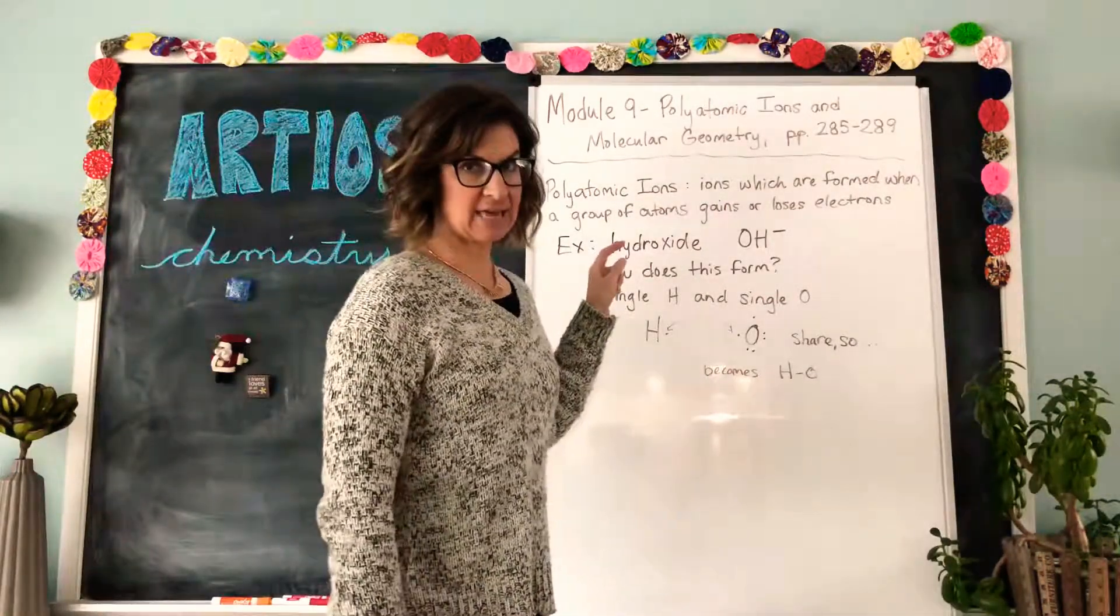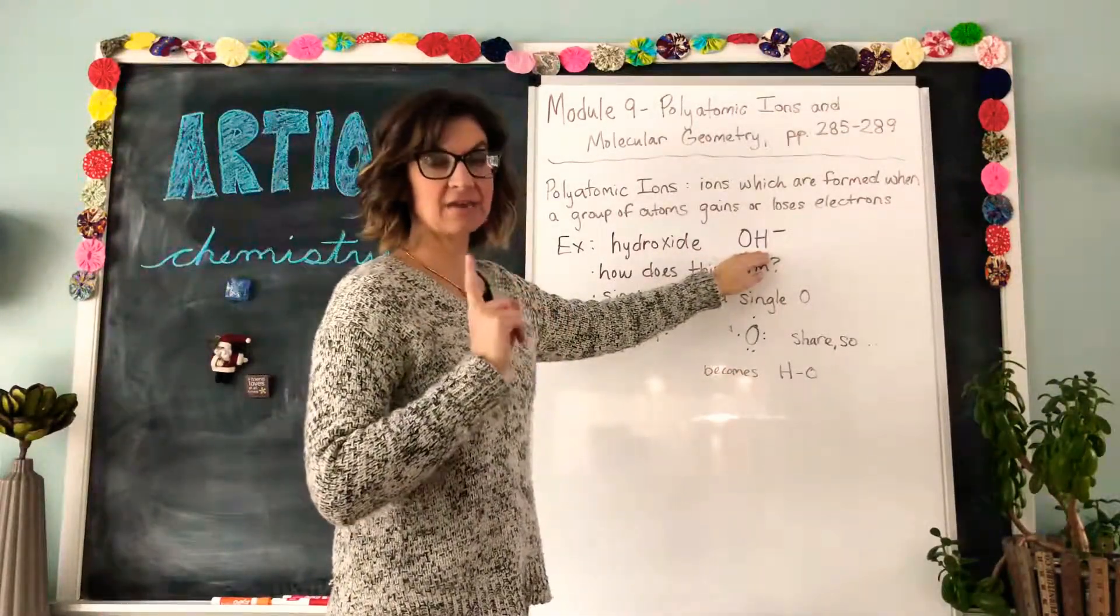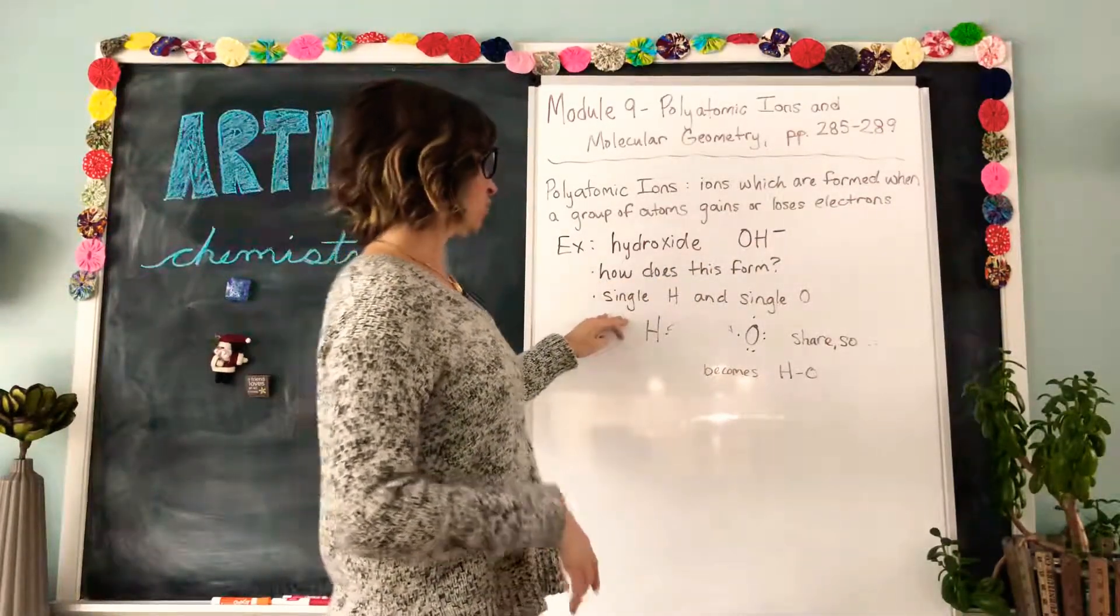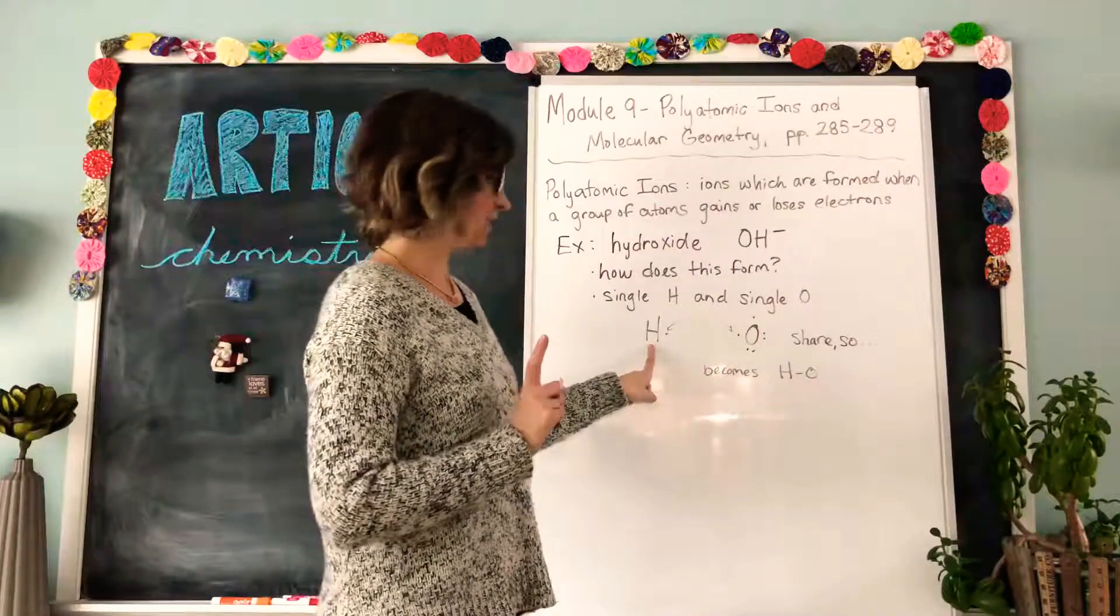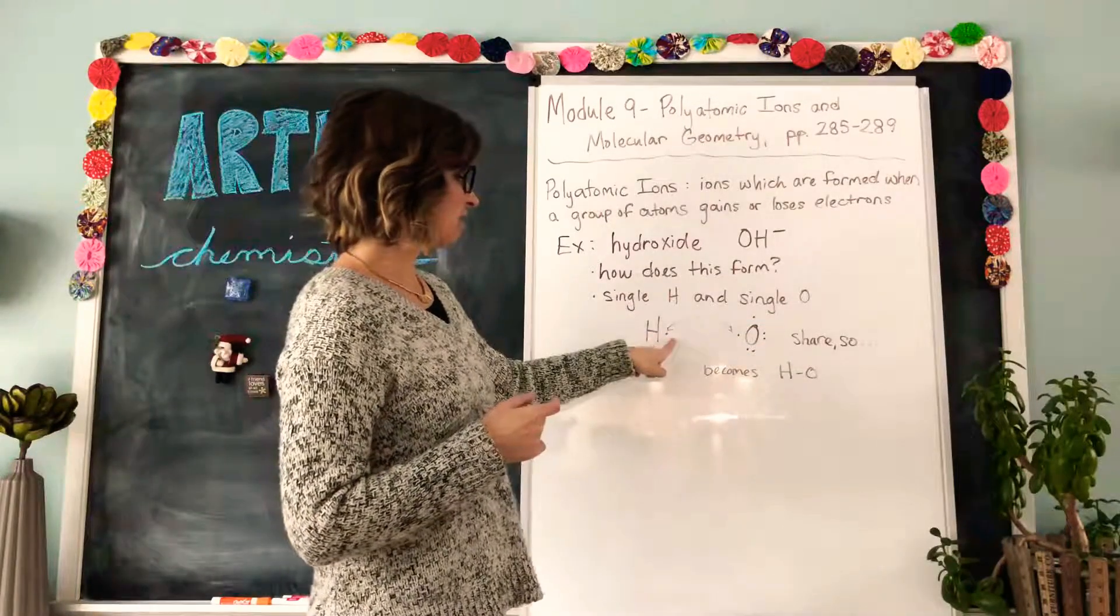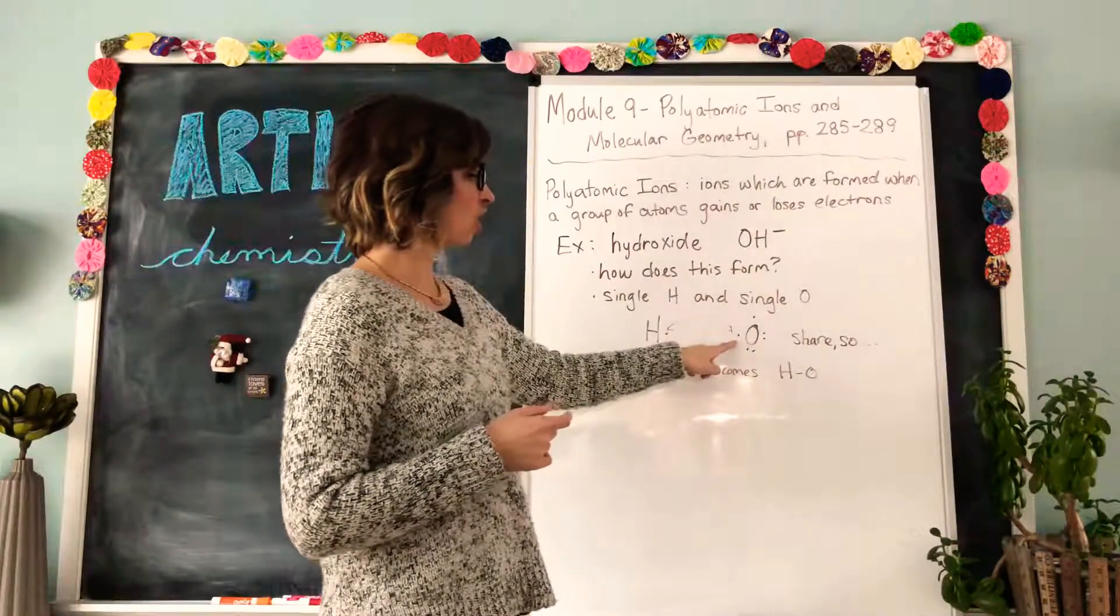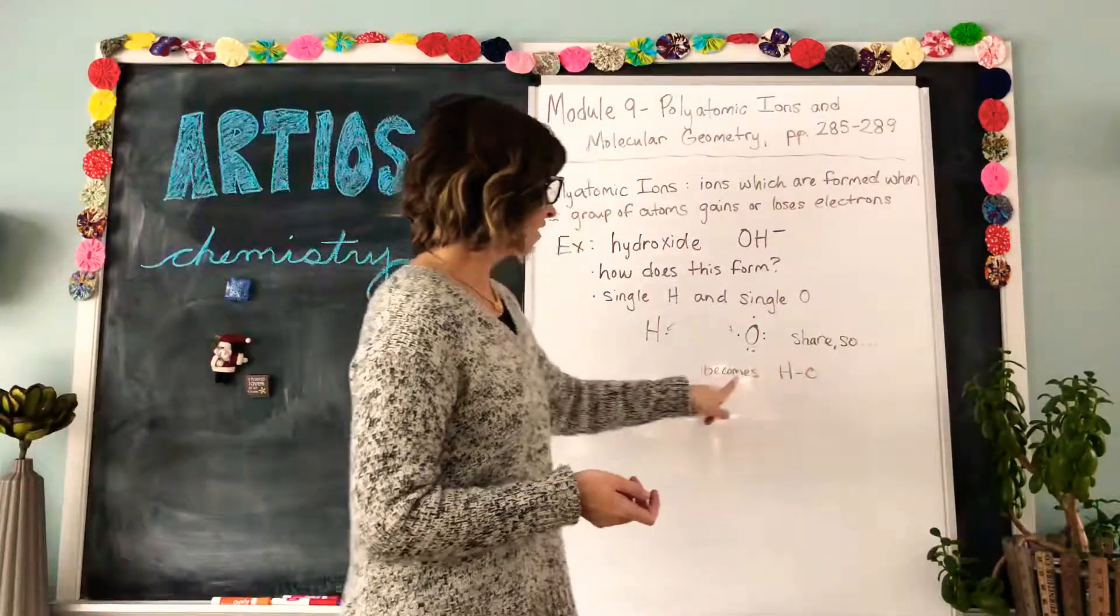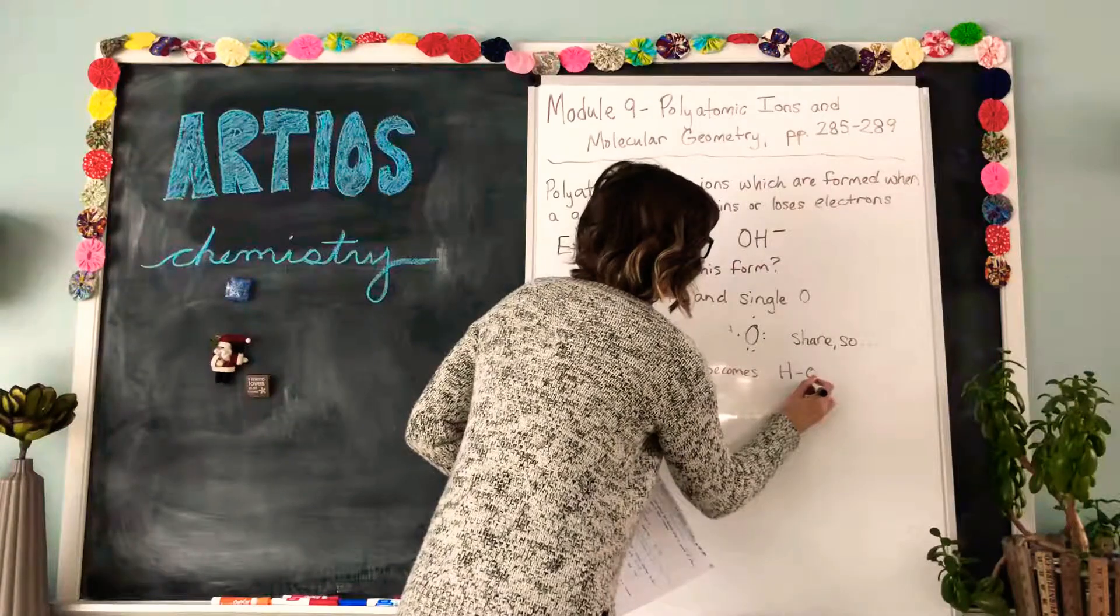One of those important polyatomic ions is hydroxide. The chemical formula is OH negative, so it has a one negative charge. How does this form? First we're going to draw Lewis structures for a single hydrogen and a single oxygen. Hydrogen has one valence electron, oxygen has six because it's in column six. So I drew the dots around each of those.